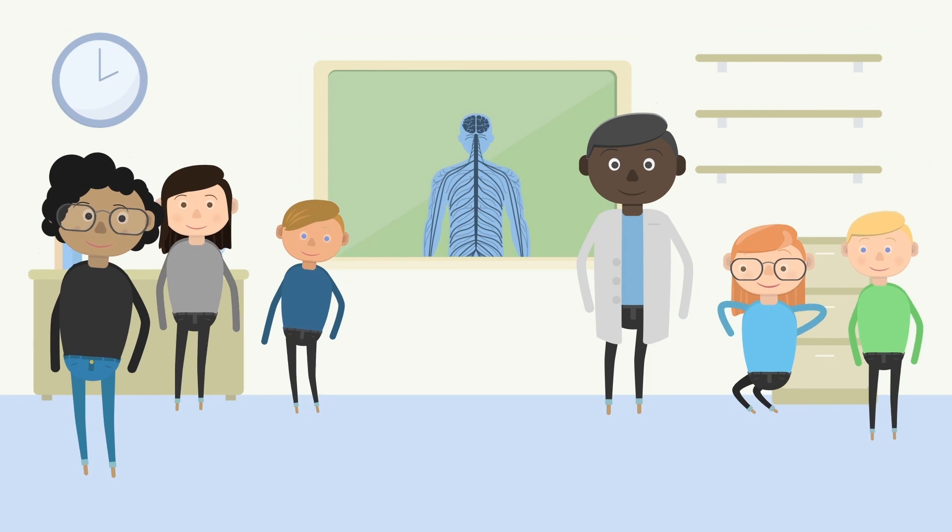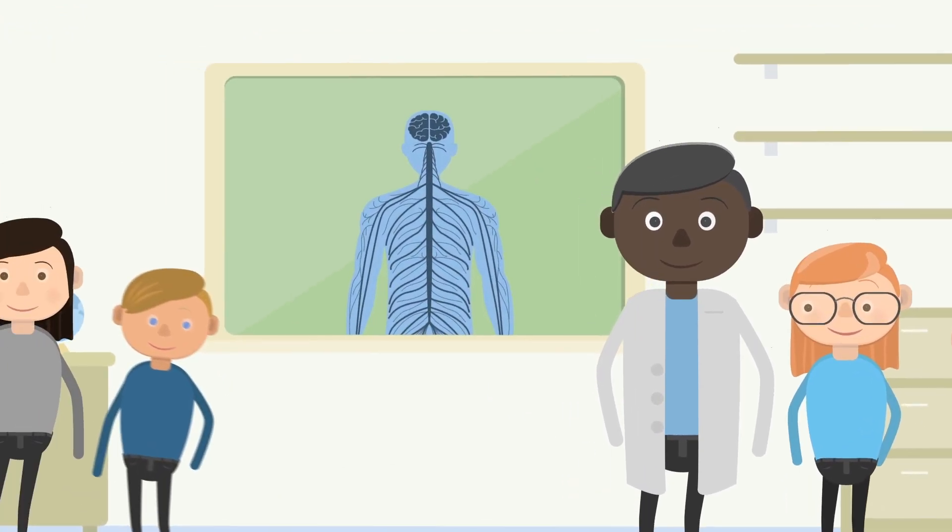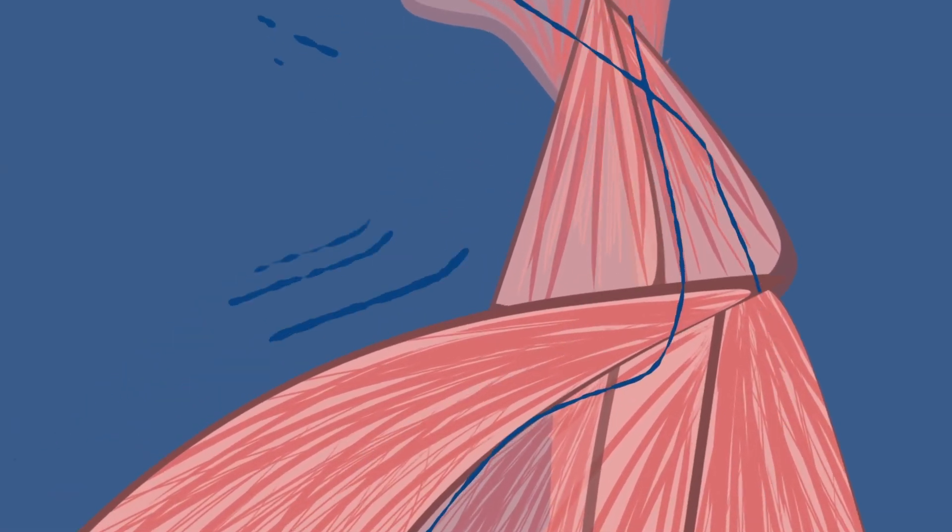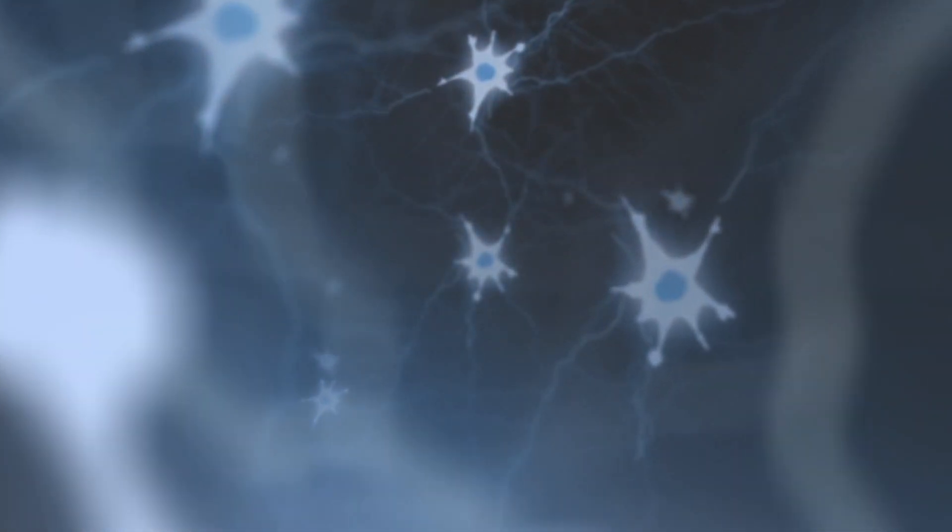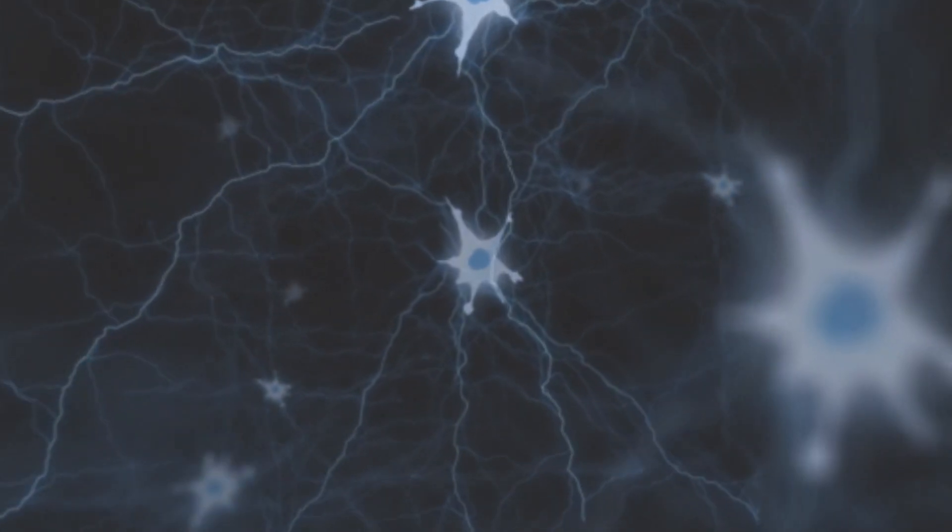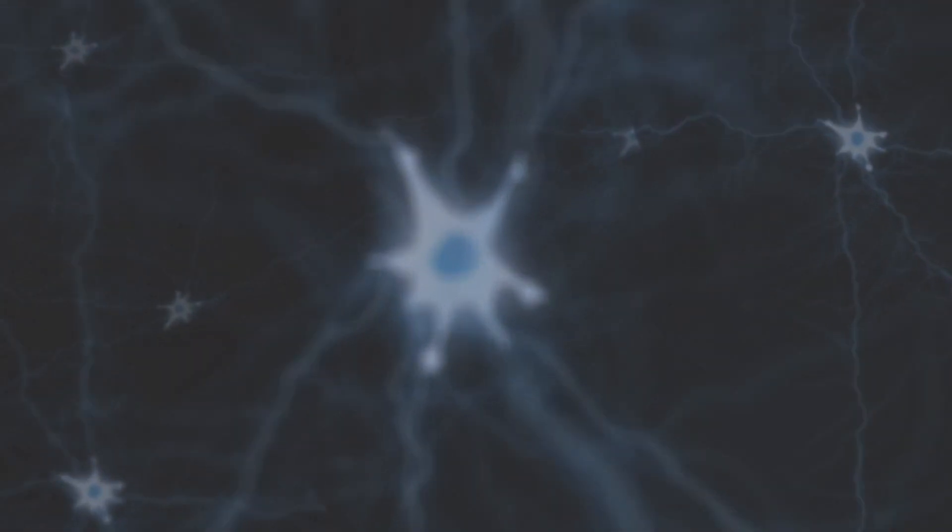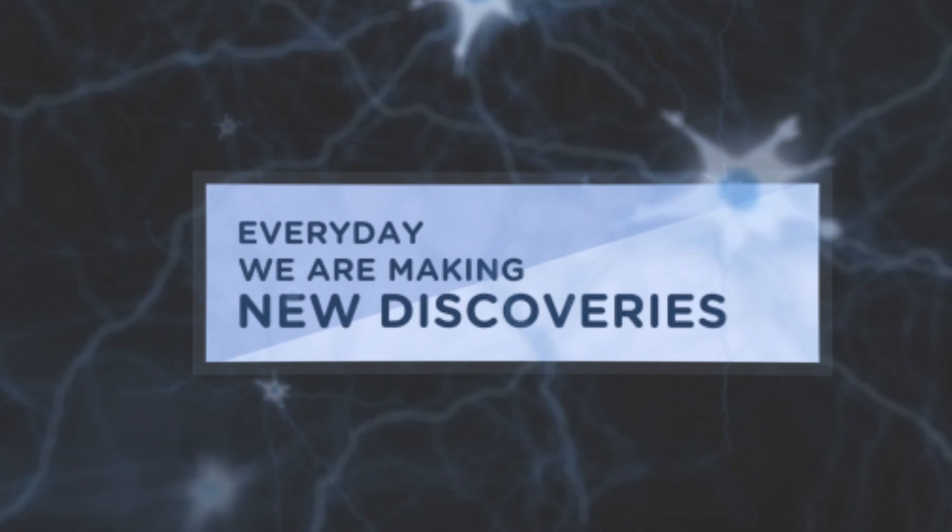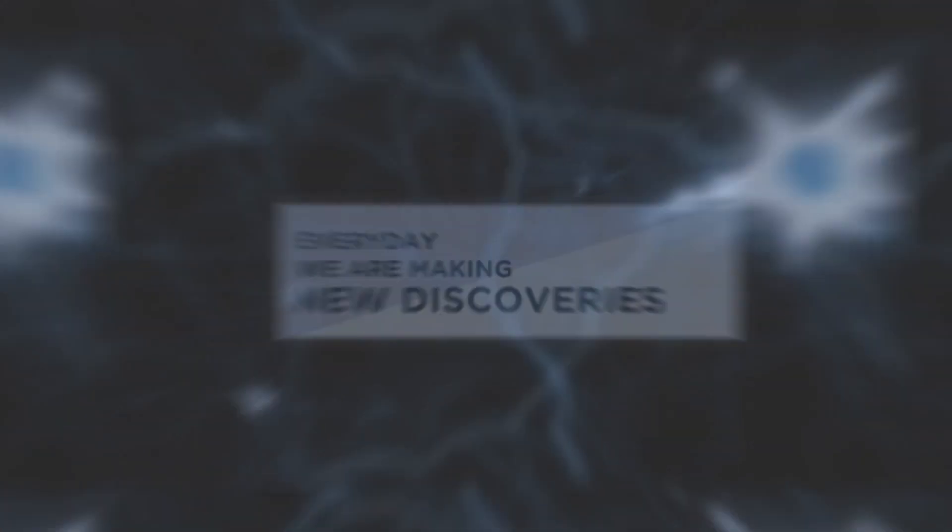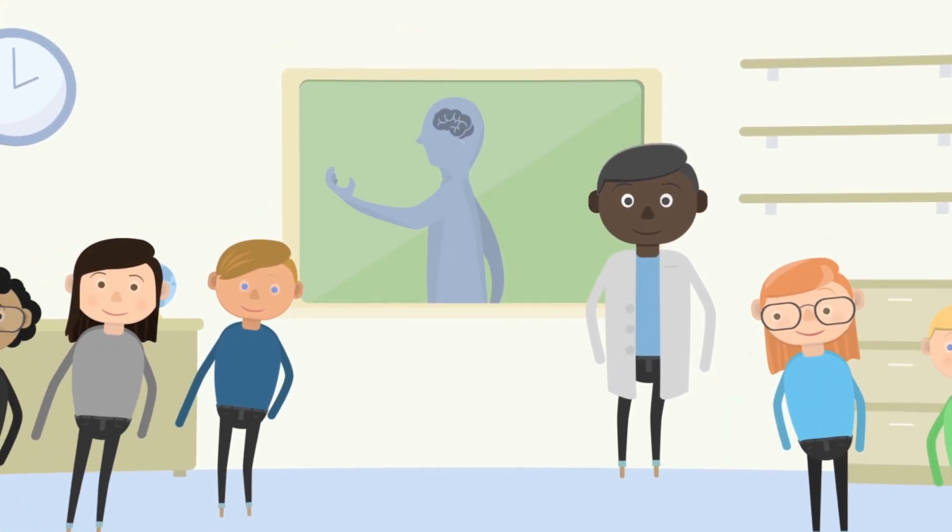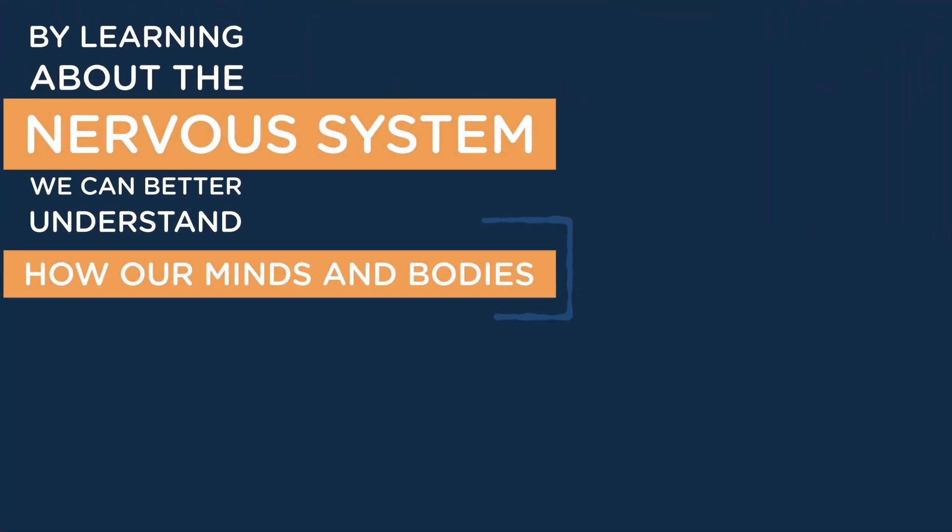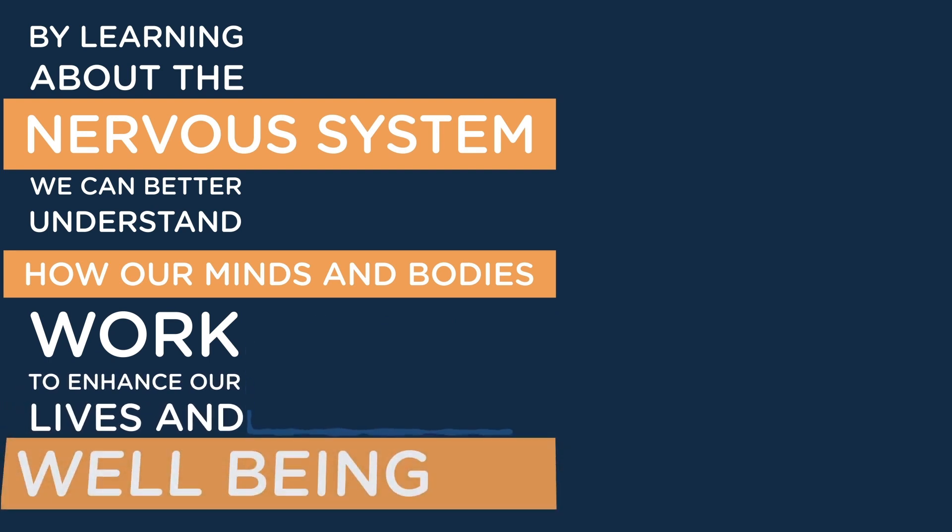Are you ready for an adventure of a lifetime? The nervous system, which includes the brain, spinal cord, and nerves, is involved in every aspect of how we interact with the world. Neurologists are dedicated to unraveling the mysteries of the nervous system and understanding how it impacts our experiences in the world. The nervous system is so important. Every day we are making new discoveries of how the nervous system works and impacts our lives. By learning about the nervous system, we can better understand how our minds and bodies work to enhance our lives and well-being.